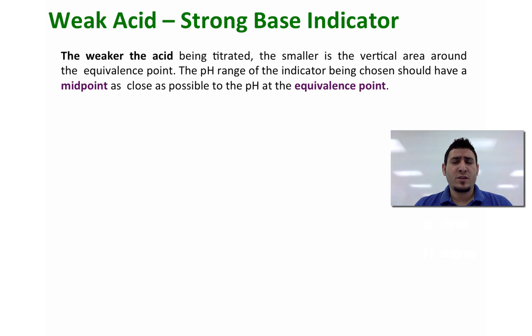However, we have limited options or choices when we are working with weak acids. So the weaker the acid being titrated, the smaller is the vertical area around the equivalence point. The pH range of the indicator being chosen should have a midpoint as close as possible to the pH of the equivalence point.